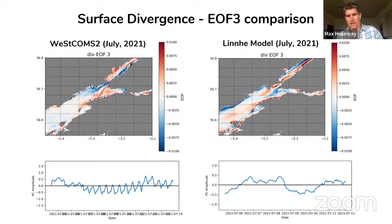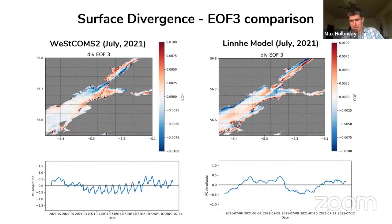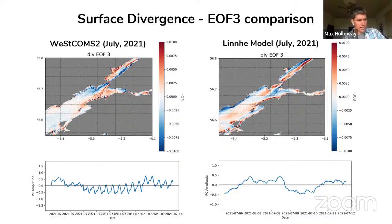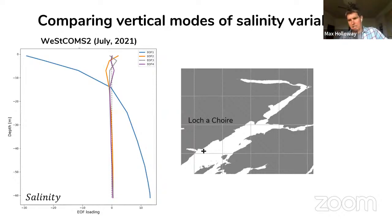Comparing EOF3 between WestCOMMS and the high-resolution Loch Linnhe model for the same period: the spatial structure in the EOFs is very different, as is the time series pattern. This shows that as you go to lower vertical and spatial resolution you pick up less of the lower modes of variability. The leading modes of variability are captured reasonably well by lower-resolution models, but it's these lower modes that are relevant for aquaculture — especially when looking at freshwater dynamics and dynamics in the surface layer.